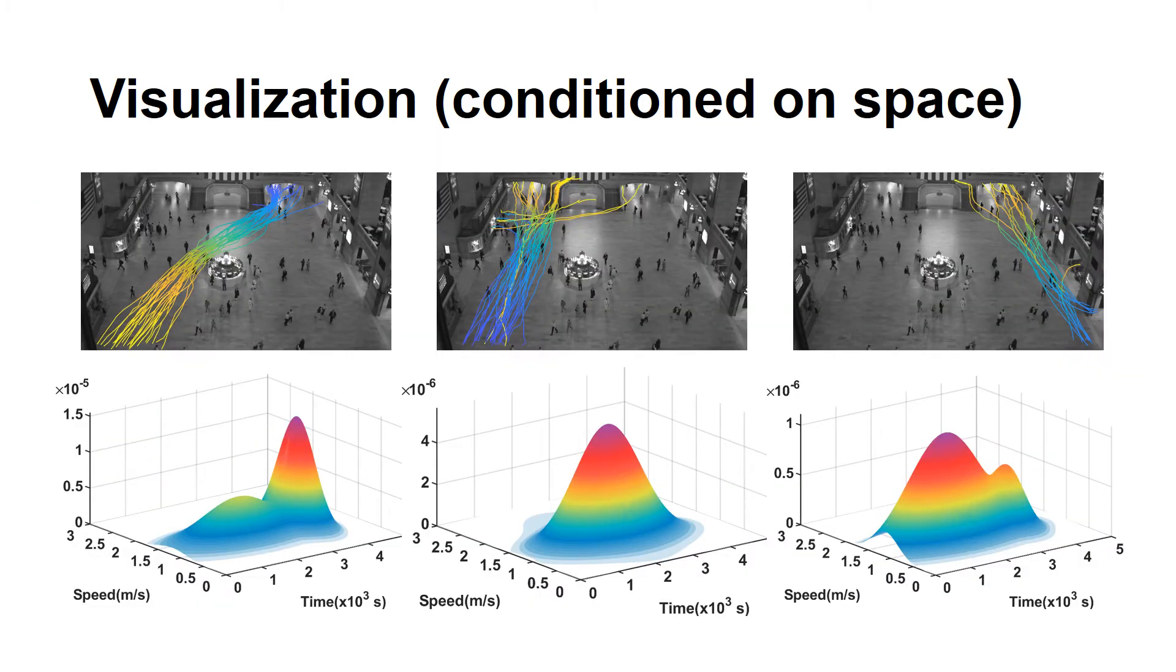Of course, if given space flows in interest, we can show their time-speed joint distributions. Here are some examples. For each space flow, the time-speed distribution shows how speed distributions of the pedestrians on this flow changes over time. This is helpful in identifying, for example, when congestion might happen, where it happens and how serious it is.